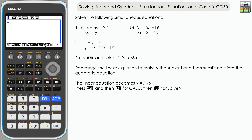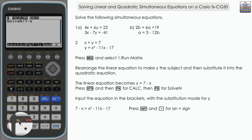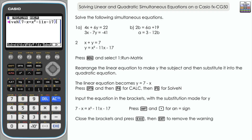F5 is SolveN, and it should open a set of brackets. We're going to input our equation with the substitution made: 7 minus x. To access the equals sign, it's above the decimal point — Shift and then that button. Then we want the quadratic: x squared minus 11x minus 17. Close the brackets and press execute.